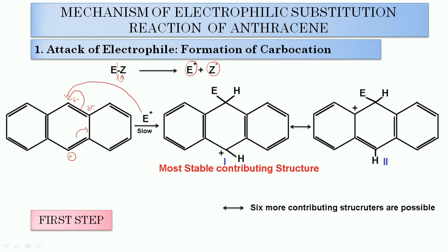This is the most stable contributing structure in this case. Again, this pi bond will shift toward this site, and a fresh pi bond will form between these two carbons, and the positive charge comes from this carbon. So structure number two will get formed. Similarly, we have six more contributing structures here. Out of these total eight contributing structures, this one is the most stable. So it is step number one, which leads to the formation of the carbocation.